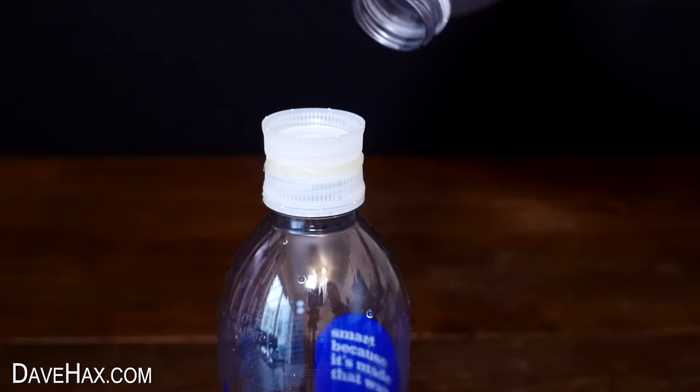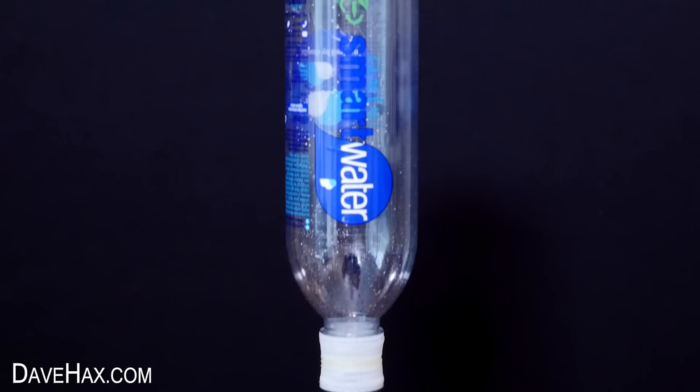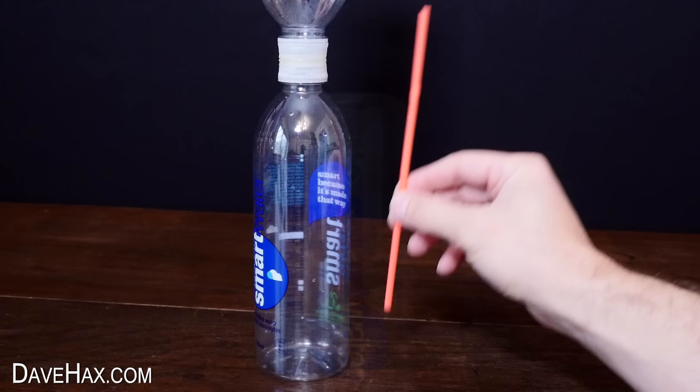Next we need to connect two bottles together using the double bottle top we made. And we're going to need a drinking straw which runs from the bottom of the bottom bottle up and through the hole at the top of the top bottle.